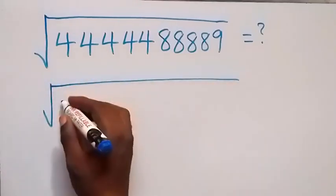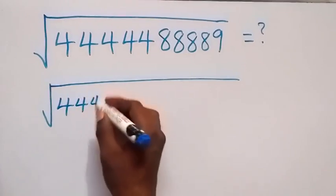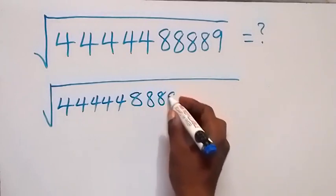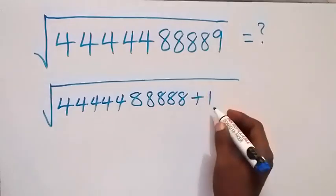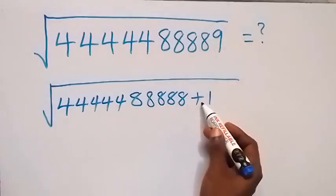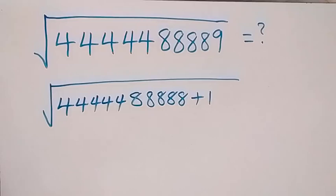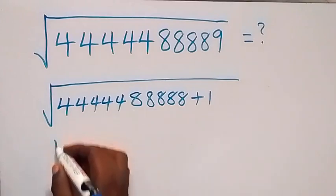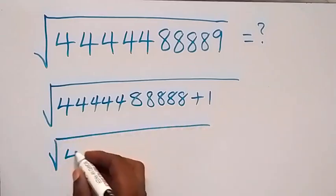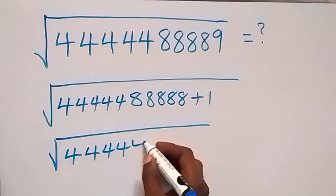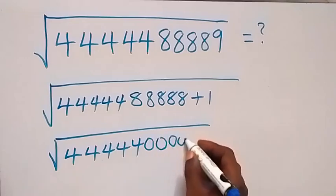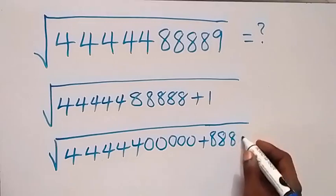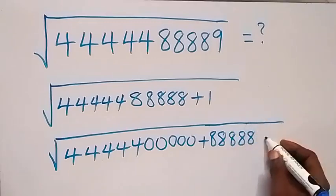We can equally write this as square root of 44444, then we can write 88889 — five 8s — as 8888 plus 1, since 9 has been written as 8 plus 1. In the same way we can also separate this into five 8s, and this will now equal square root of 44444, then 0000, plus 8888, then plus 1.